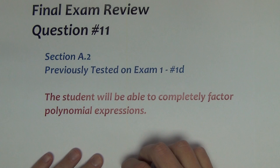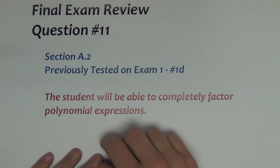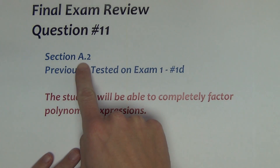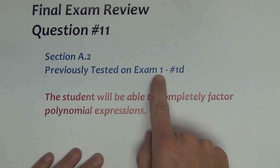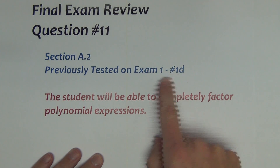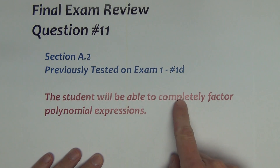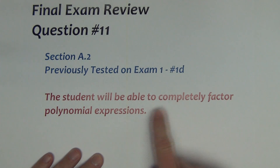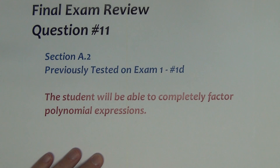Question number 11 on the final exam comes from section A.2, previously tested on the first exam, number 1D. Students will be able to completely factor polynomial expressions.